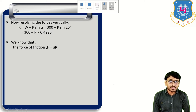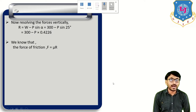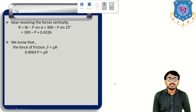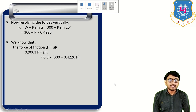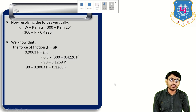We know that the coefficient of friction mu = F divided by R, so transferring R to the other side gives F = mu × R. Substituting the known values of F and R: 0.9063P = 0.3 × (300 − 0.4226P). After resolving this equation we get the only unknown, which is P, the external applied force.